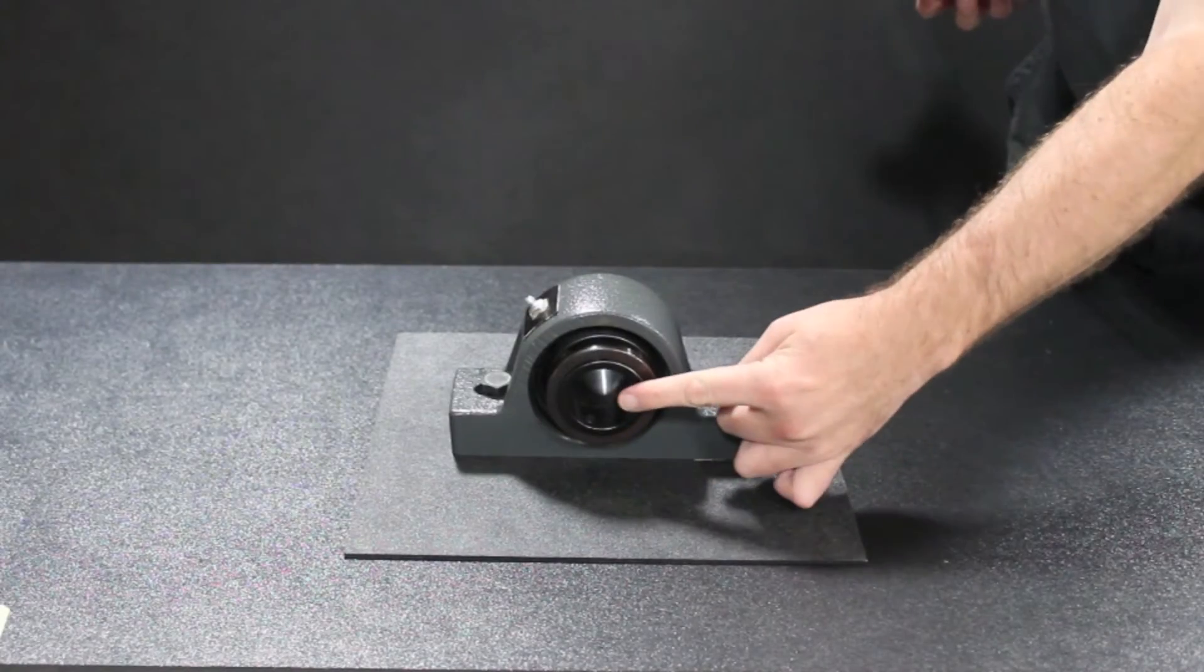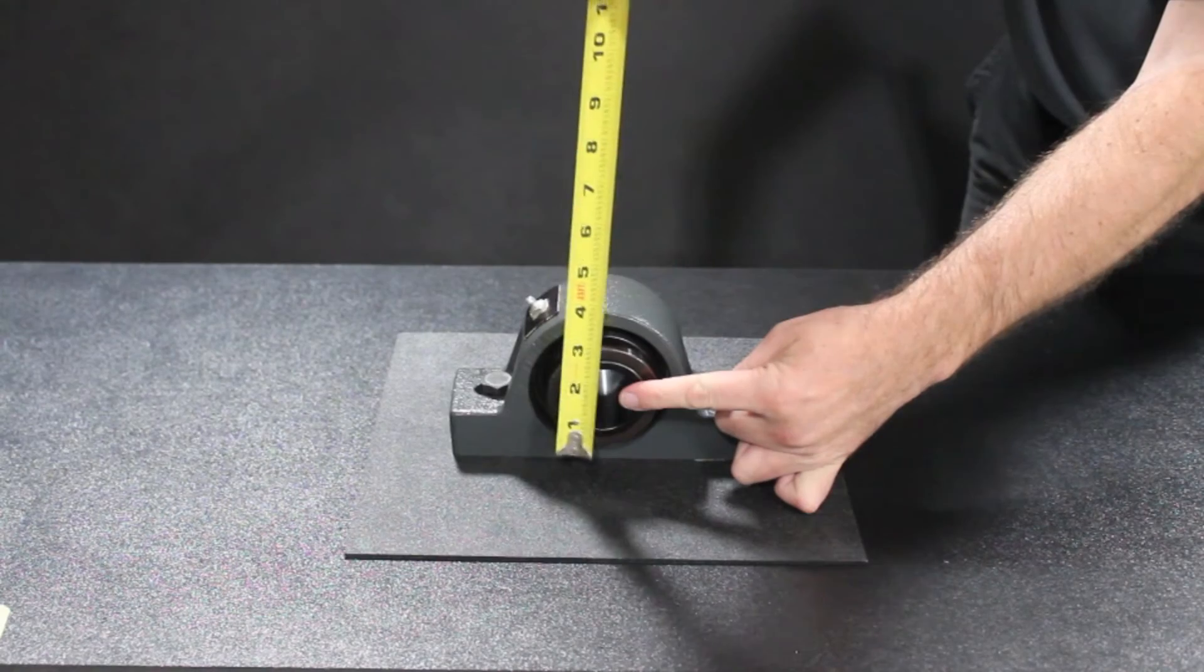The height to shaft center can be found by measuring from the mounting face of the bearing to the centermost point of the shaft.